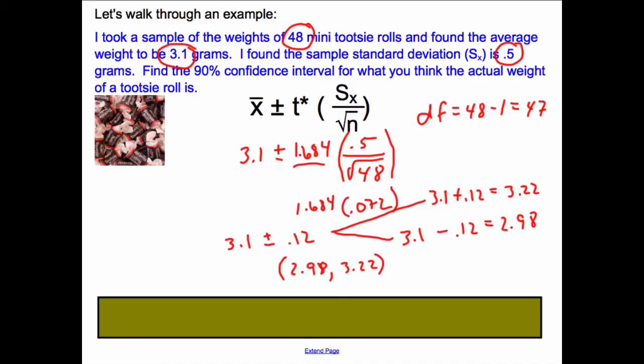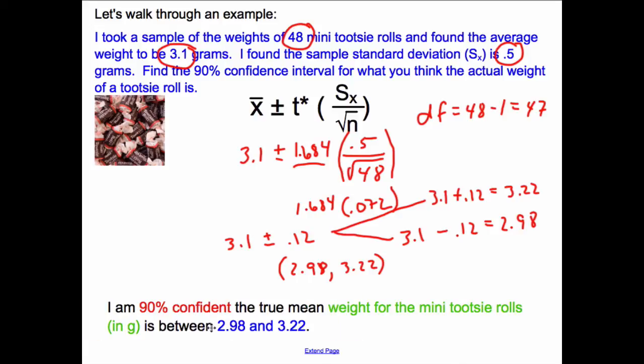So what have I found? I am 90% confident the true mean weight for the mini Tootsie Rolls in grams is somewhere between 2.98 and 3.22 grams. Again, because of my sample of 48 Tootsie Rolls, I was able to go through and come up with a confidence interval where I think the true mean weight for a Tootsie Roll is, for a mini Tootsie Roll, and I am 90% confident the true mean weight is between 2.98 and 3.22.